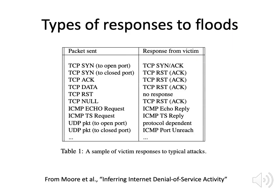When looking at floods, we can see signatures of responses that the victim sends which the spoofed host receives unexpectedly. A SYN packet to an open port — possibly a SYN flood — produces a SYN-ACK response. A SYN to a closed port produces an RST response. A TCP ACK produces an RST response. Data produces an RST response because it's unexpected. If we send an RST as an attack, there'll be no response. So there's a whole set of different responses we can expect to observe.